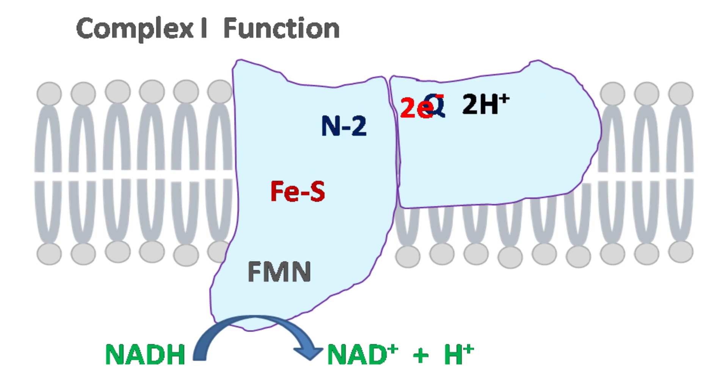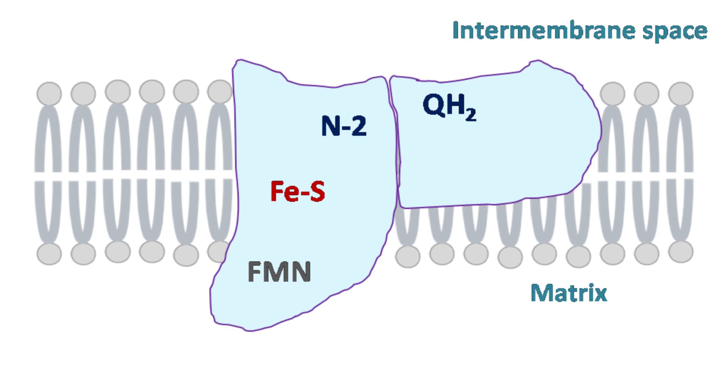Ubiquinone accepts the two electrons along with two H+ ions to form QH2. During this process, there is simultaneous transfer of four H+ ions from the matrix to the intermembrane space of mitochondria.